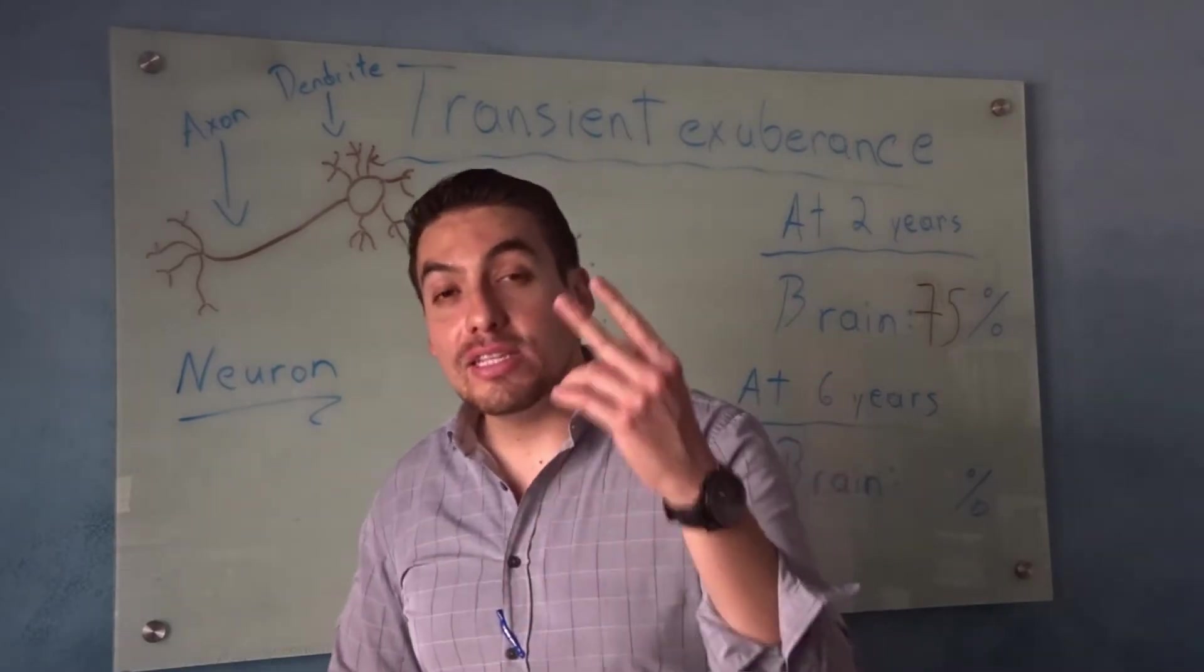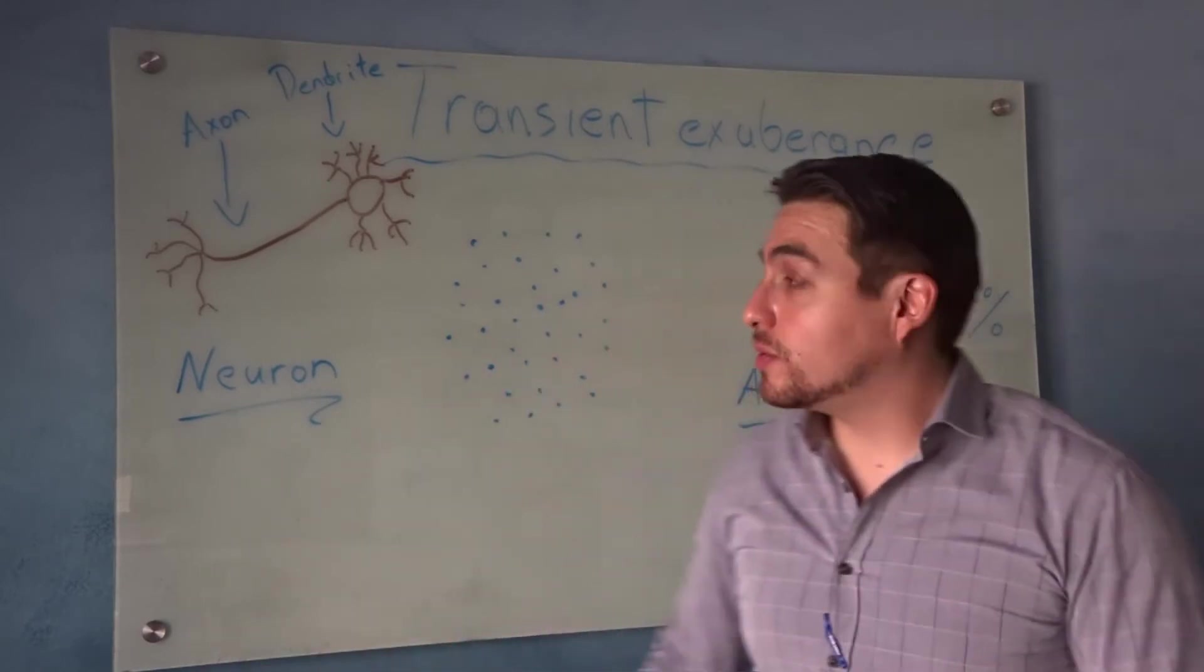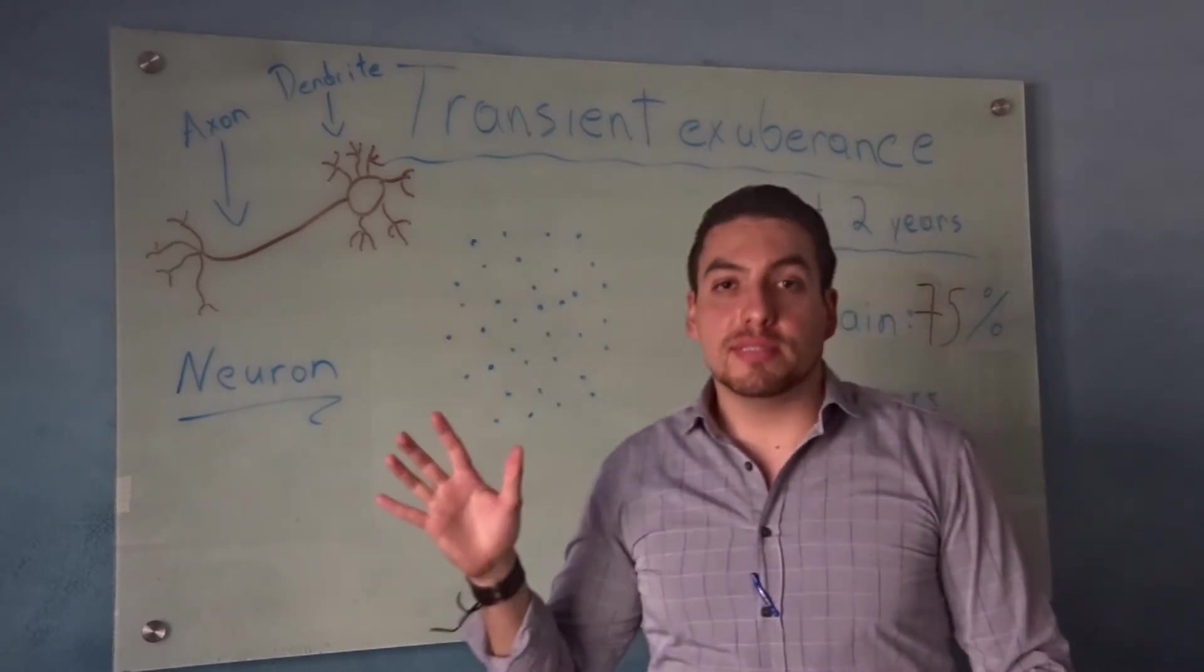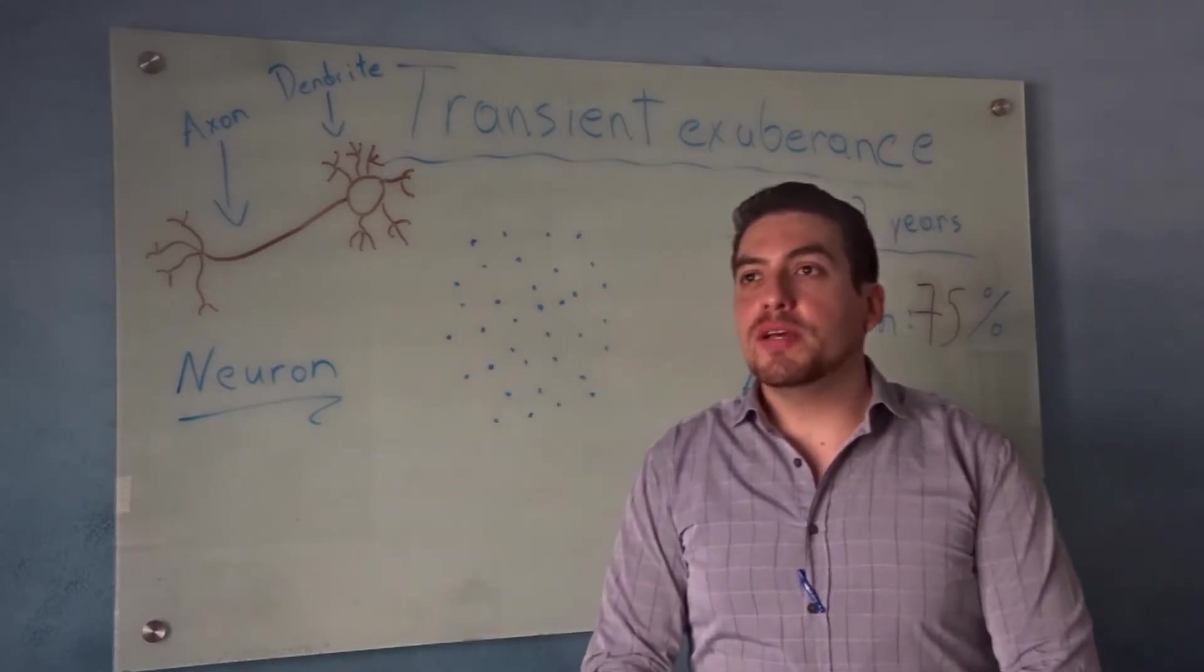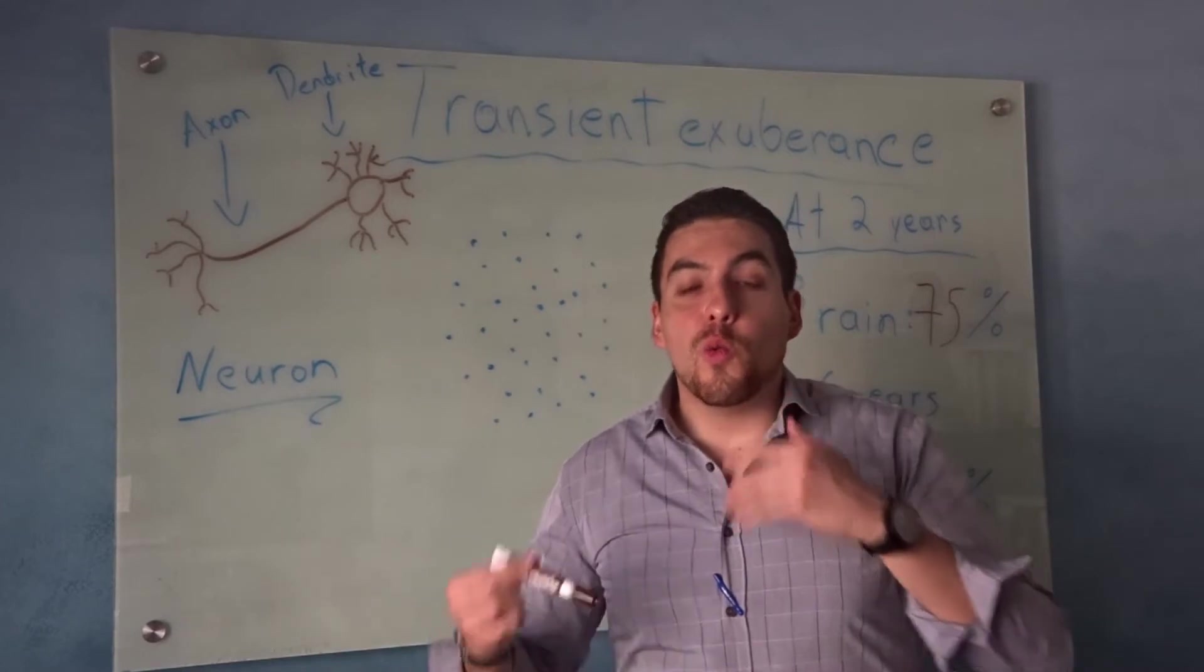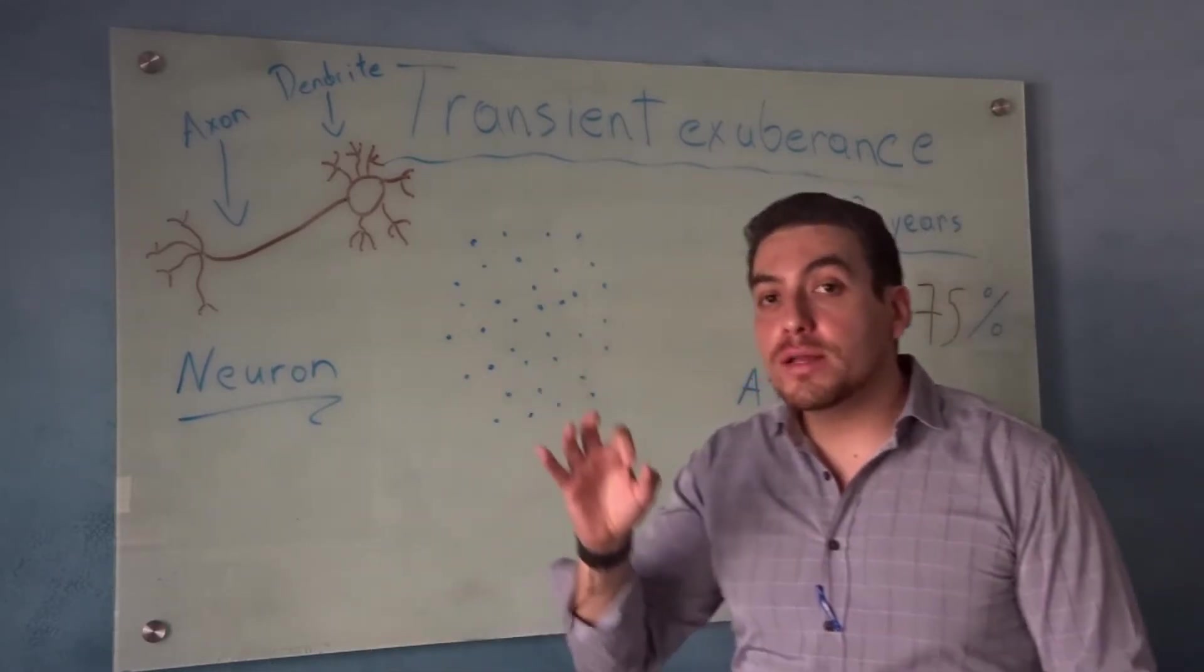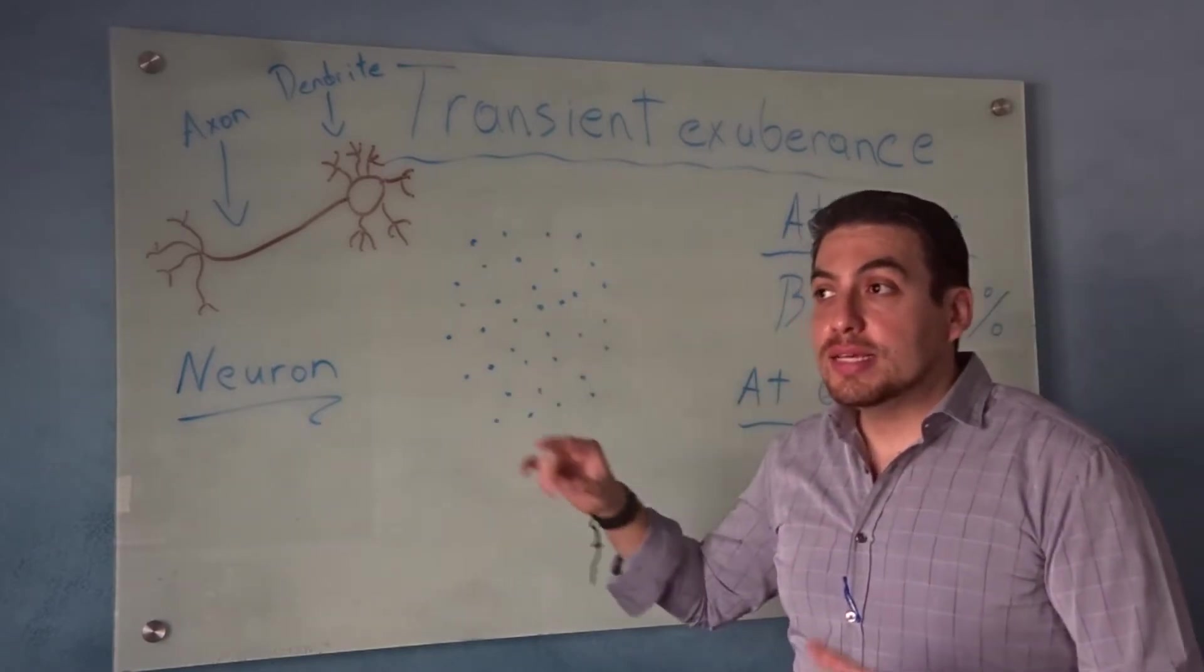What is making the brain grow so much? How does it attain 75% of its adult size in two years? Think theoretically about this - this is the main lesson in this video. All the dots that you see here, they're all neurons. Think of each dot as a neuron. By the time that you're born, you pretty much have already made all the neurons that you will make through your life.